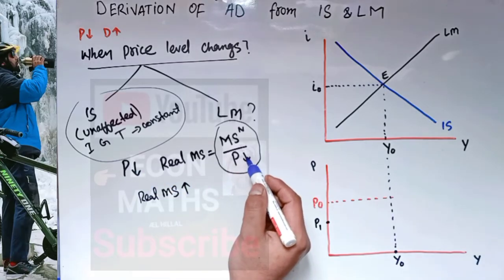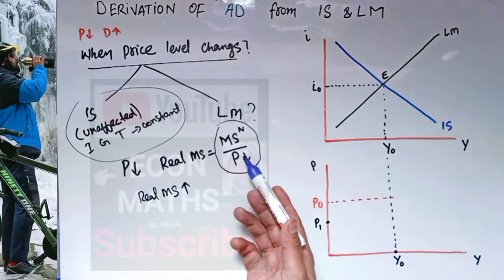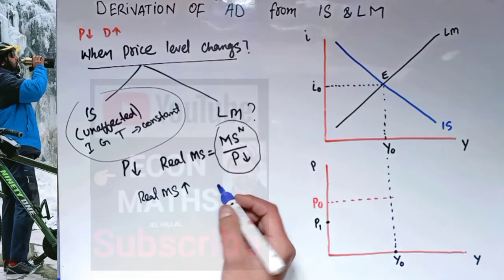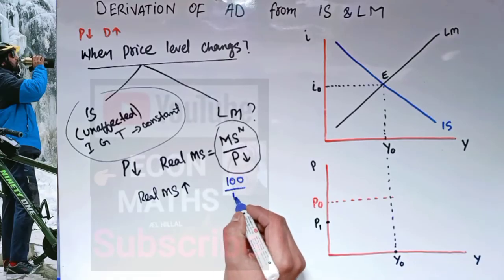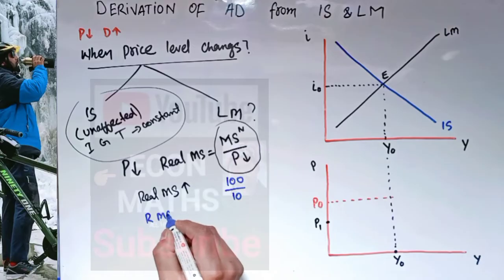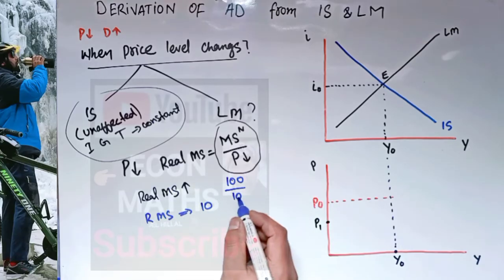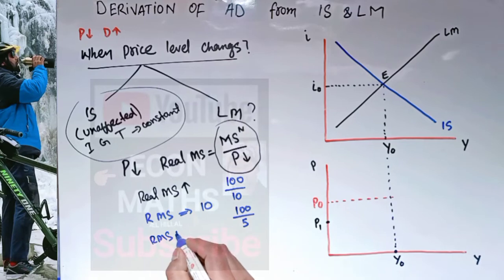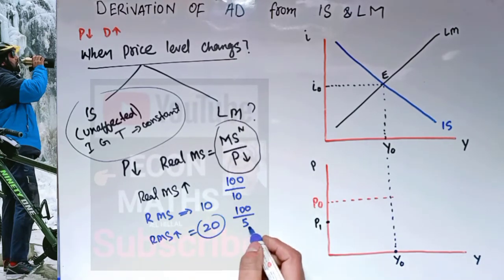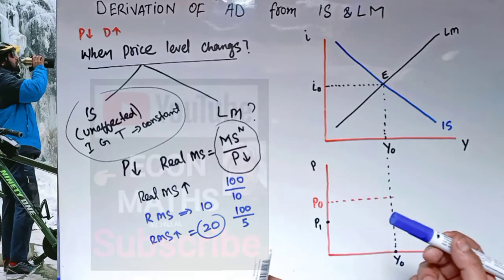When the denominator decreases, the number becomes bigger comparatively. For example, if we have a nominal money supply of 100 and price level initially was 10, real money supply is 100/10 = 10. If the price level decreases from 10 to 5, real money supply becomes 100/5 = 20. So when price decreases, real money supply increases.